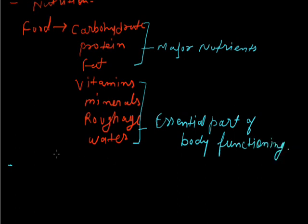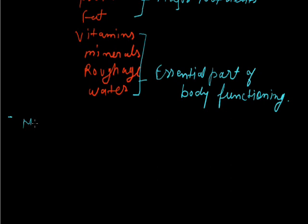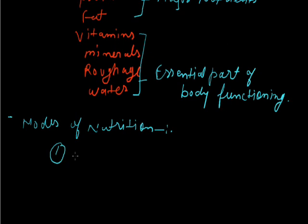Now let's discuss how nutrition takes place inside the body of an animal. Nutrition is simply the process by which the body gets energy from the required food. Let's discuss the different modes of nutrition in animals. The first mode is that an animal can be herbivorous.